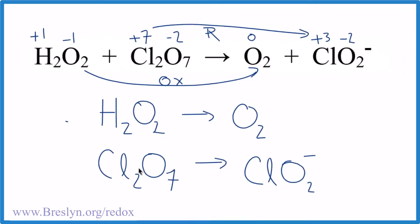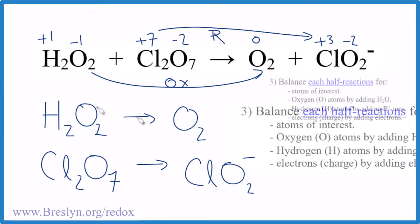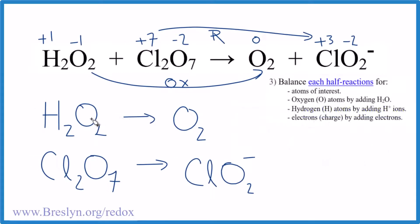We have our oxidation half reaction and our reduction half reaction. We balance each one first for atoms, then for oxygens, then hydrogens, and finally for charge by adding electrons. Two oxygens match two oxygens — that's good. But there are two chlorines on one side and just one on the other, so I put a two there. Atoms are now balanced.